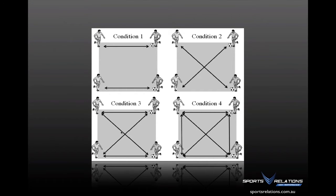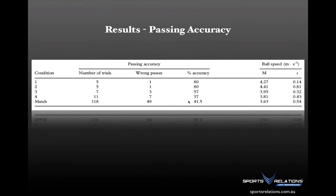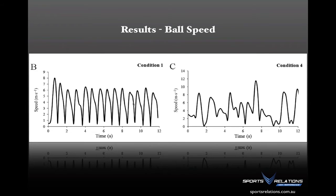Conditions one and two were predetermined passes; three and four combined perception with action. Passing accuracy in one and two was 80%, but dropped as soon as the perceptual component was introduced, decreasing in condition four to levels similar to match situations. Even more interesting was ball speed — in condition one, ball speed was very constant, suggesting a very narrow range of technique or kinematics being produced. In condition four, where perception is driving the action, there was much more variability in ball speed, reflecting different motor patterns.